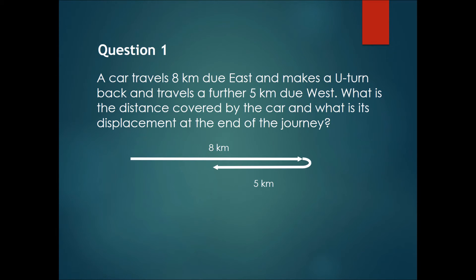In question one, a car travels 8 km due east first. Then maybe he forgets something, and he thinks 'oh no, I'll have to turn back.' So he makes a U-turn and travels back 5 km. Calculate the distance covered by the car and also its displacement at the end of the journey. You can pause the video here and solve the question.